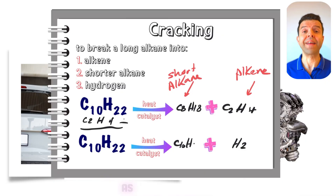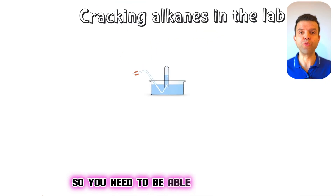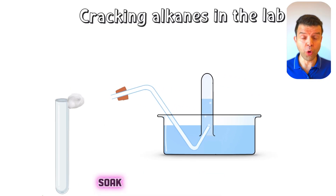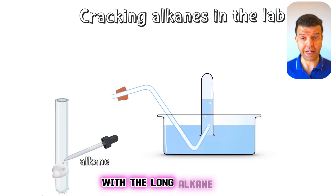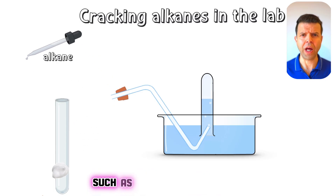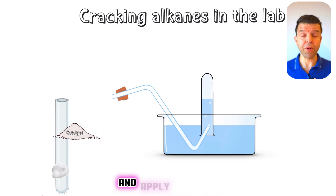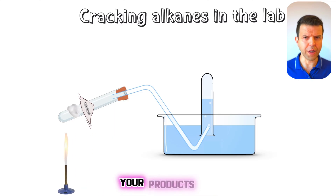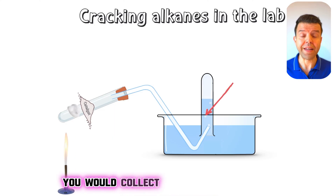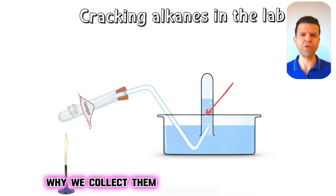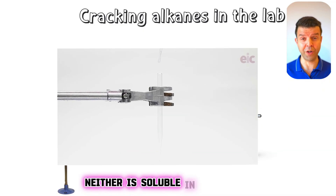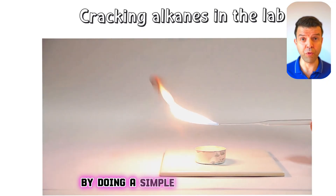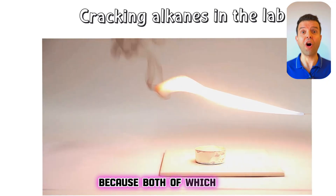Cracking reactions are important as a practical, so you need to be able to set up the cracker in a school lab. You need cotton wool soaked in the long alkane, and a catalyst such as aluminum oxide. Put both in a test tube and apply heat to both the catalyst and the alkane. Then collect your products — the short alkane and alkene — underwater, because neither is soluble in water. Finally, you can prove you've collected alkenes and alkanes by doing a simple flame test, since both are flammable.